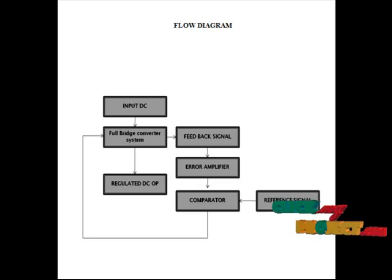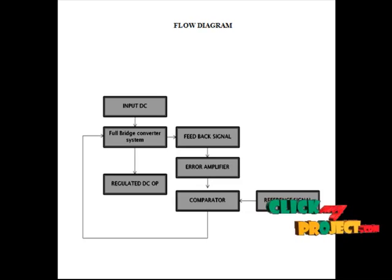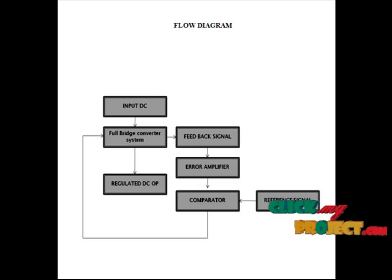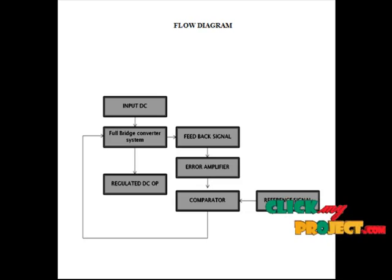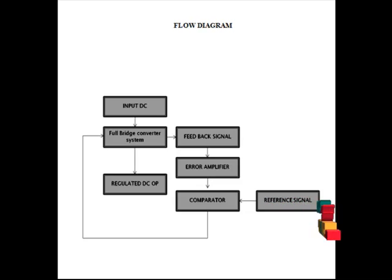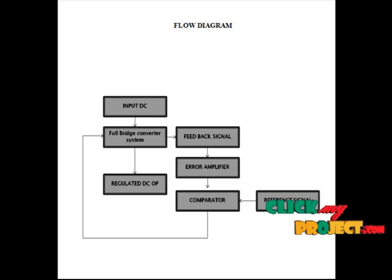By using the full bridge controlling circuits of the DC to DC converter, we get a clear result of regulated DC supplies at the output under load regulation. We are using buck converters which reduce the unwanted and unregulated power supplies from the unregulated DC input. At the load side, we get regulated DC supplies maintained at any input variation according to our controlling pulses, which are provided using the feedback signal. This feedback is given to the CMOS switching circuit to control the overall switching devices of the full bridge converter circuit, and we get the regulated supply at the load side.